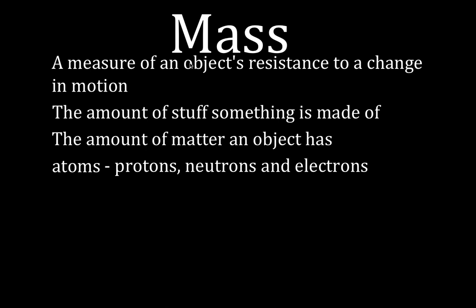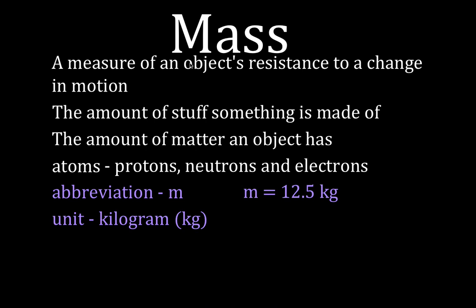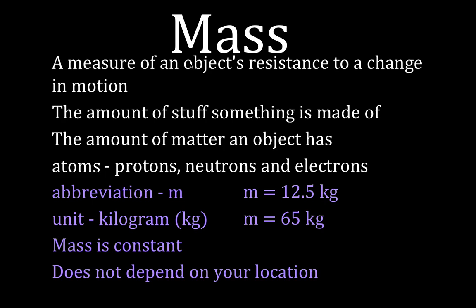So let's talk about what the abbreviation for the mass is: M, M for mass. The base unit in the metric system for mass is the kilogram. For example, the mass of something is 12.5 kilograms or the mass of a person is 65 kilograms. We like to say that mass is constant. If you have an object that's just sitting there, its mass is not going to change unless you cut it in half or add something to it. The mass does not depend on the location. It doesn't matter where you move it to, it will have the same mass.